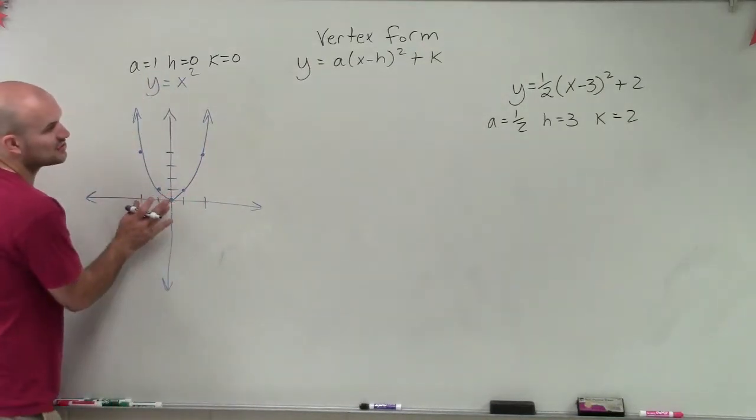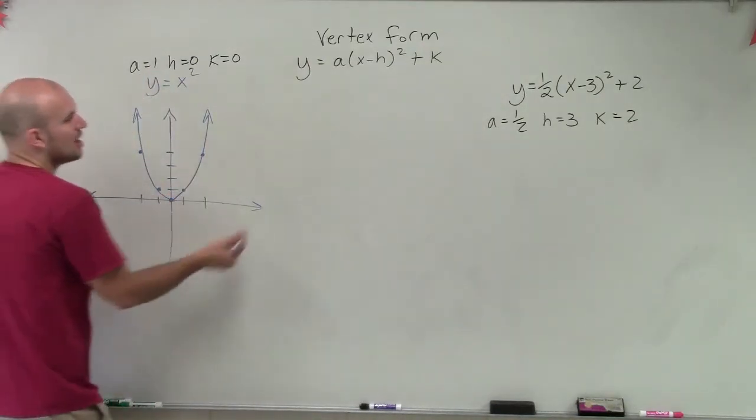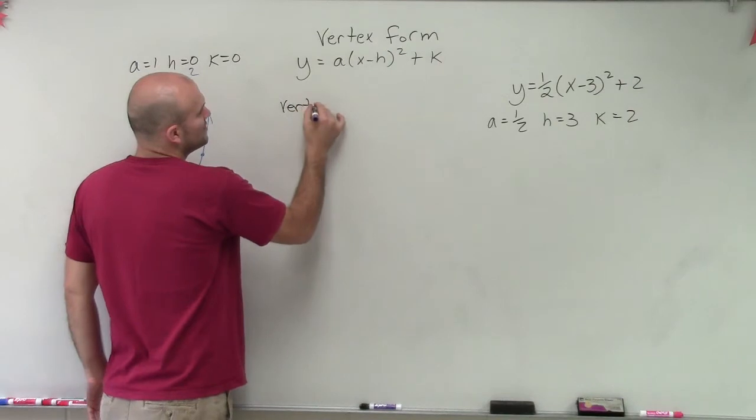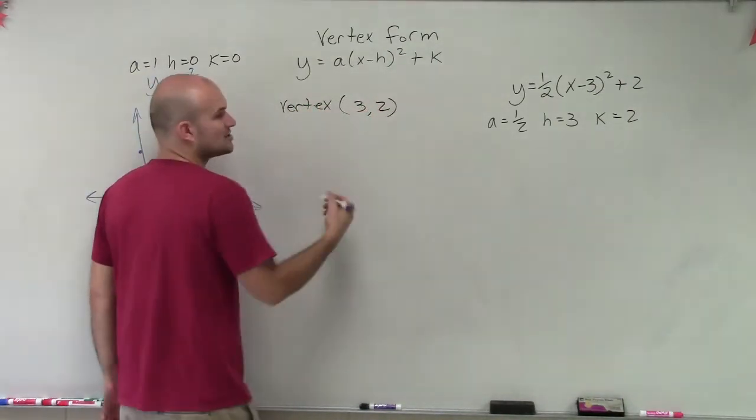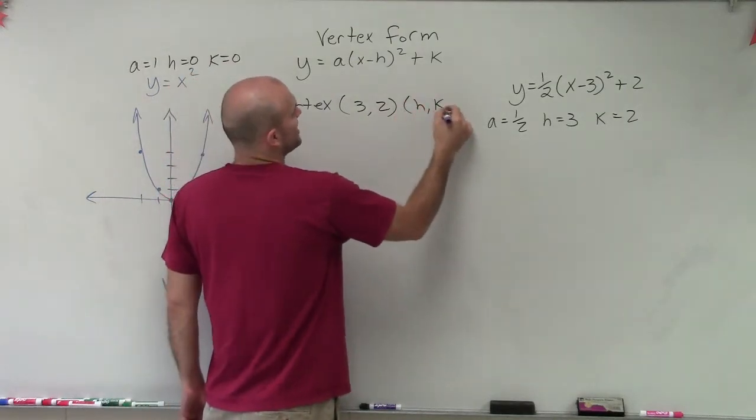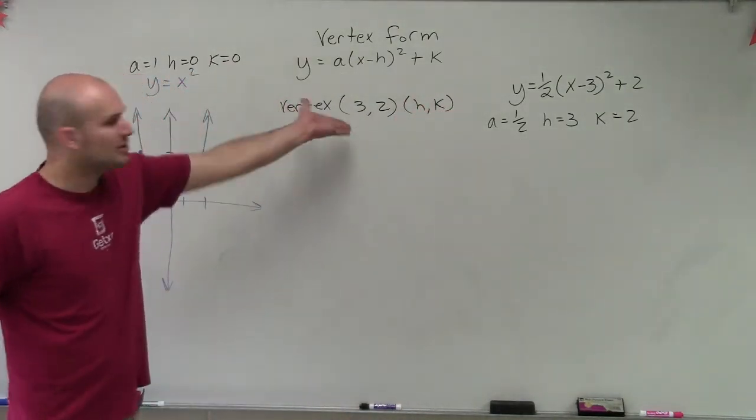So if I was going to take this graph and shift it three units to the right and two units up, I'd be able to determine that my vertex is going to be those transformations, which is (3, 2). And also, a lot of times in vertex form, we just understand that it's (h, k), which you can see I wrote right there.